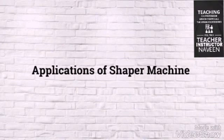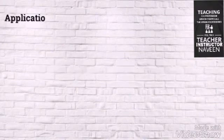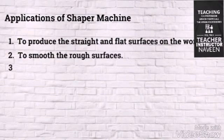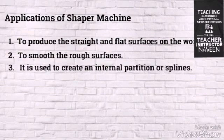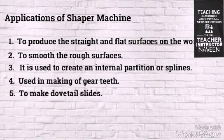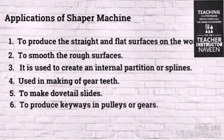The Shaper Machine is used to produce straight and flat surfaces on the workpiece, to smooth rough surfaces, to create internal partitions or splines, in making gear teeth, to make dovetail slides, and to produce keyways in pulleys or gears.